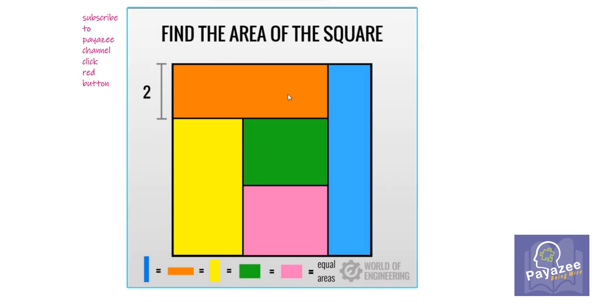Here we got different shapes inside the square with the same area. Orange rectangle, yellow, green, pink and blue. So here we have the clue that all these shapes have equal area.